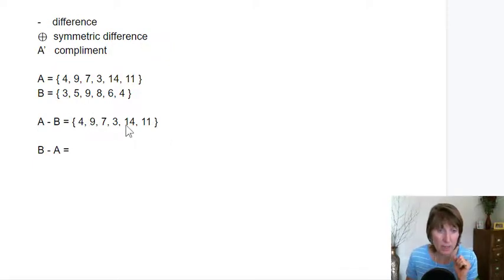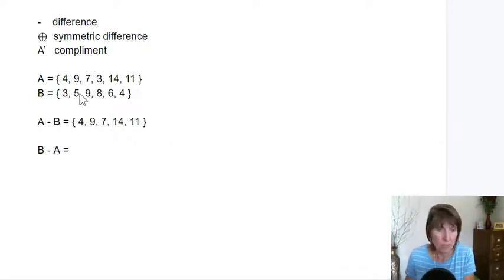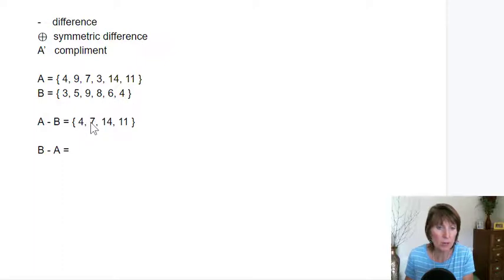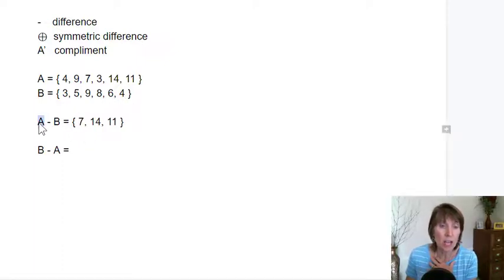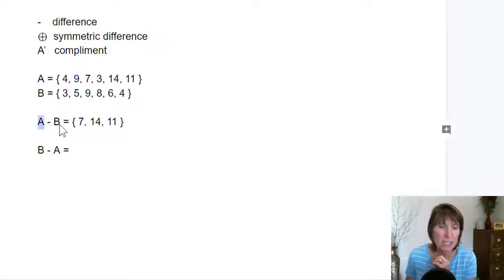So 3 is in B, so we take it out. 5 is in B, but it's not in this one. 9 is in B, so we take it out. 8 doesn't matter. 6 doesn't matter. But 4 is in B, so we take it out. So this is all the elements of A minus any element that is also an element of B.